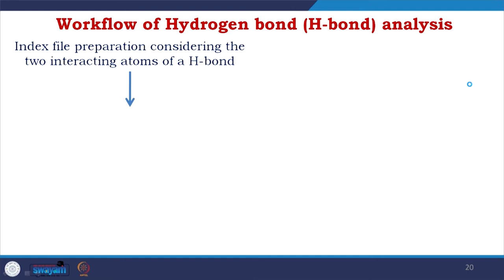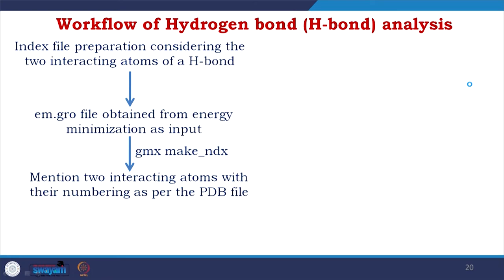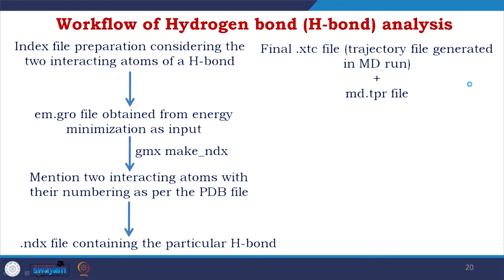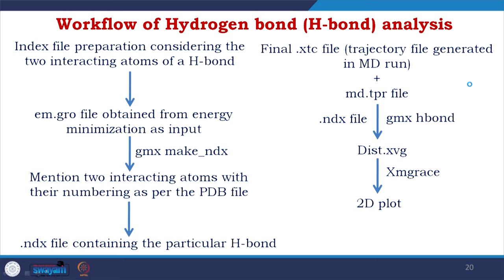For the hydrogen bond workflow: prepare an index file considering the two interacting atoms of the hydrogen bond. Use the em.gro file obtained from energy minimization as input. Apply the command 'gmx make_ndx' to create the index file mentioning the interacting atoms with their numbering as per the PDB file, generating a .ndx file containing the particular hydrogen bond. Then take the final .xtc trajectory file and md.tpr file, apply 'gmx hbond' with the .ndx file you generated, get the distance .xvg file, apply xmgrace, and get the 2D plot.